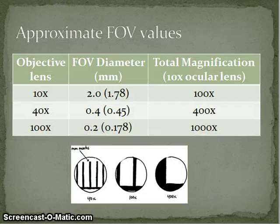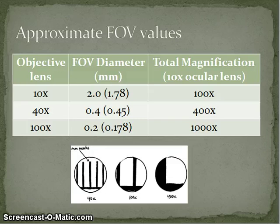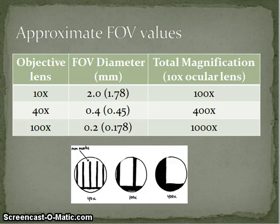As a rule of thumb, approximate values — assuming a 10x ocular lens, which you should double-check since not all school microscopes have this — are: with a 10x objective lens, field of view is approximately 2mm; with the 40x lens, approximately 0.4mm; and with 100x, approximately 0.2mm. That's a rough guide for field of view sizes.